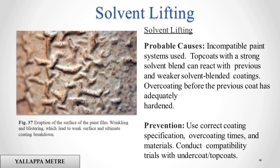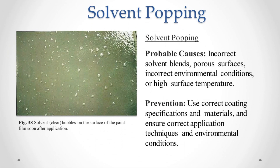Solvent Lifting. Probable causes: incompatible paint systems used — top coats with a strong solvent blend can react with previous and weaker solvent-blended coatings. Overcoating before the previous coat is adequately hardened. Prevention: use correct coating specification, overcoating times, and materials. Conduct compatibility trials with undercoat/topcoats.